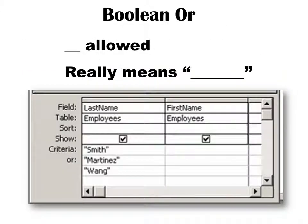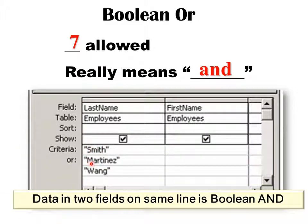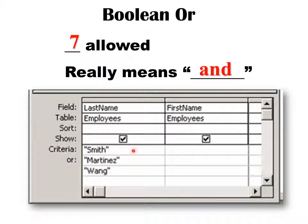I mentioned OR — it is part of Boolean logic, and you'll see it in rows below the criteria row. You only get seven OR rows. It's a bit confusing because in the QBE pane the OR rows actually mean OR: if I have Smith, Martinez, and Wang in separate OR rows, it shows any record that is Smith, Martinez, or Wang. A true AND criteria would require conditions in multiple columns on the same row, meaning both must be true.